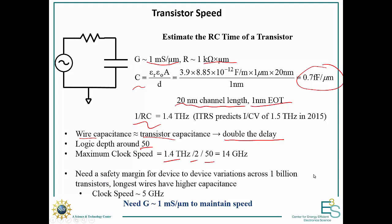There's going to be some variations, so you need a little bit of safety margin, and that maybe your longest wires will have a little bit higher capacitance. We end up with our current clock speeds around 5 gigahertz. And so what this means is that just to maintain the clock speeds where they are, we have to maintain the conductance around a millisiemen per micron. And so we have to keep a high conductance density in any type of new switch. And if the conductance goes down, the speed of the transistors will go down, and therefore the clock speed of the circuit is going to have to go down.